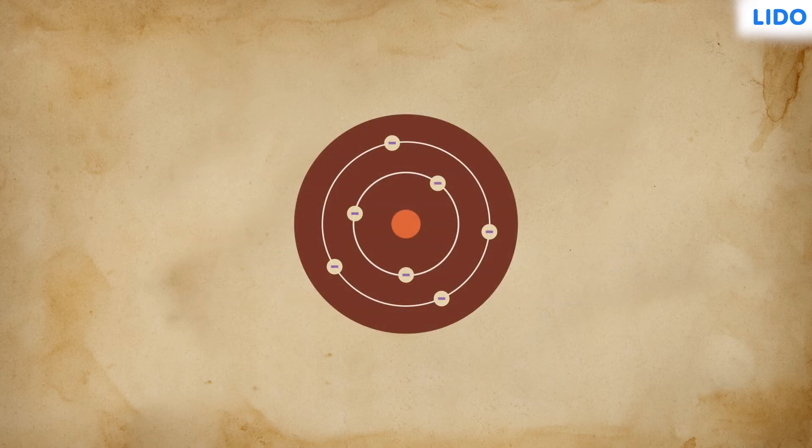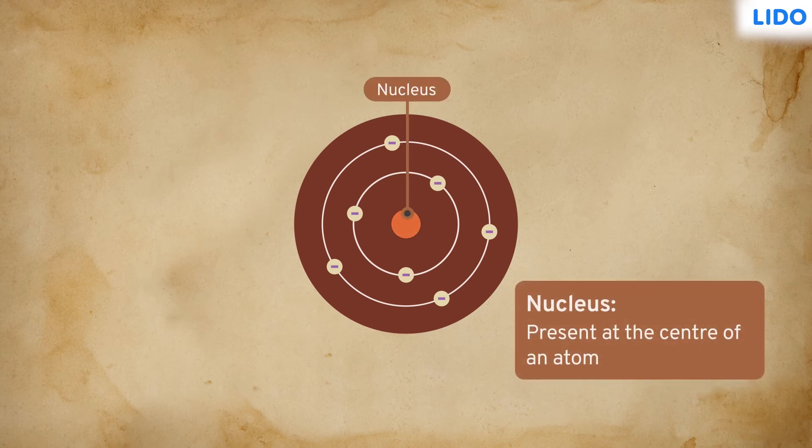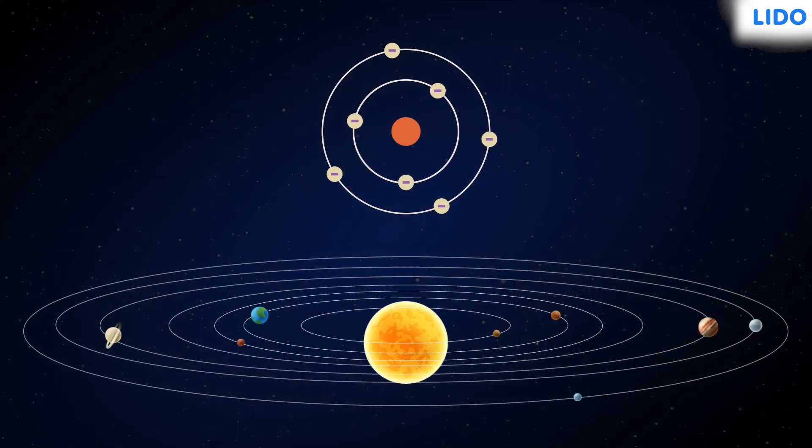He called this positively charged mass at the centre of an atom the nucleus. He also concluded that the electrons are present revolving around the nucleus like planets revolve around the sun.